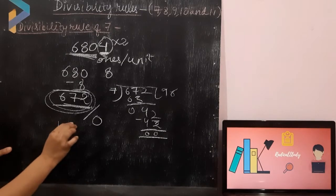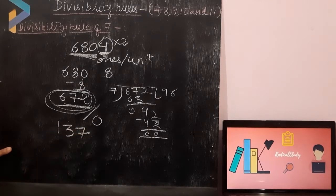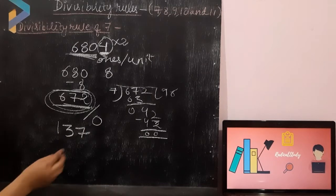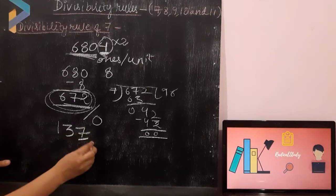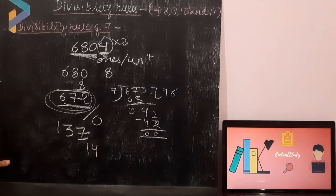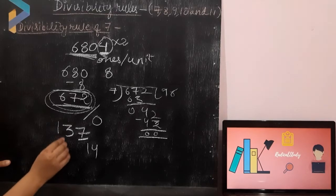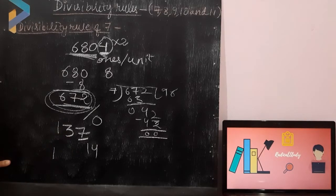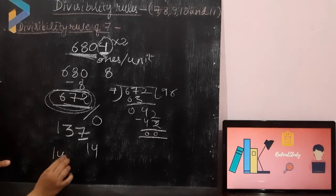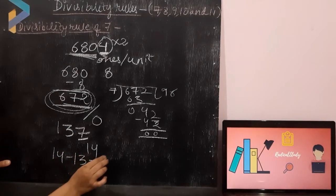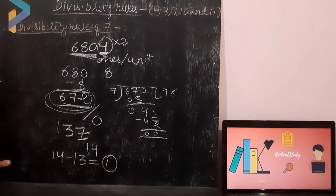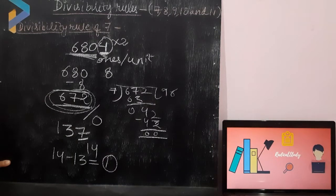Let me take one more example: 137. The digit at unit's place is doubled — 7 times 2 is 14. When I double it, it becomes 14. We subtract it from the rest of the number: 14 minus 13 is 1. So 137 is not divisible by 7.